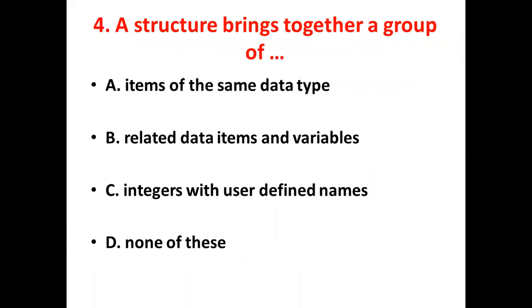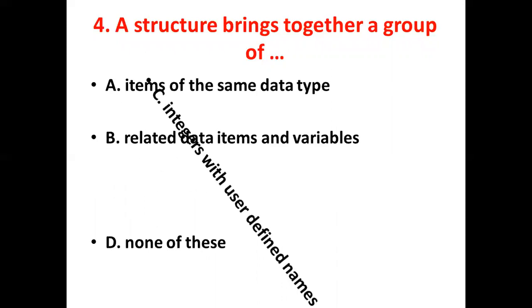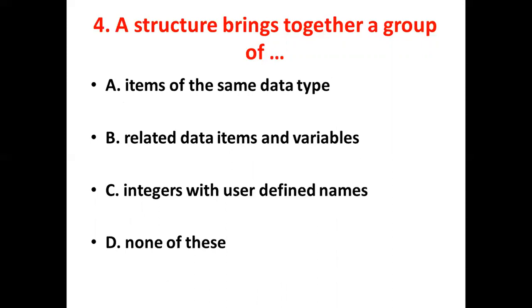Fourth bit. A structure brings together a group of dash. Option A: Items of the same data type. Option B: Related data items and variables. Option C: Integers with user defined names. Option D: None of this. Answer: Option C, integers with user defined names.